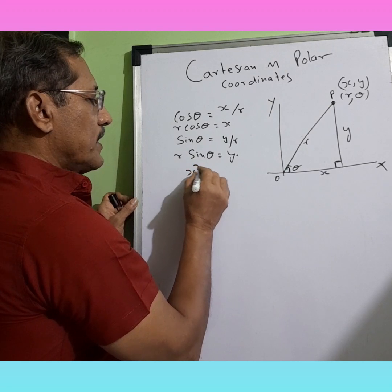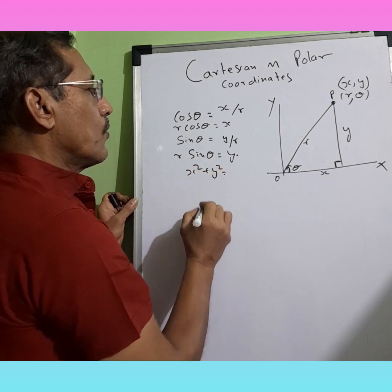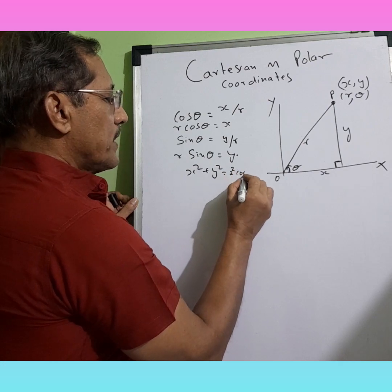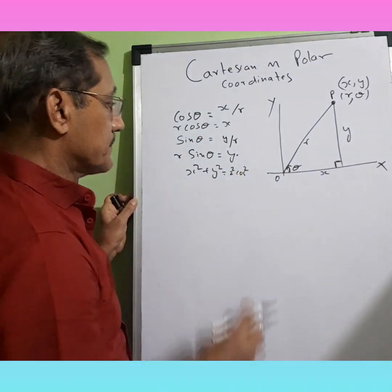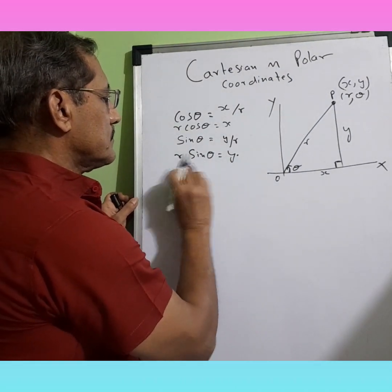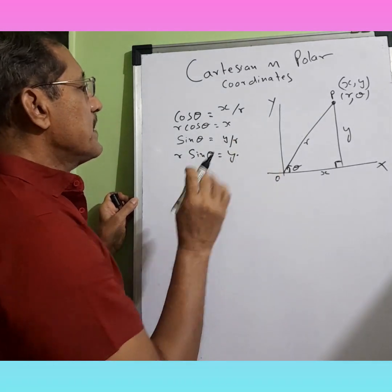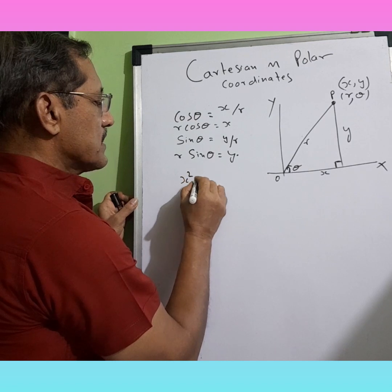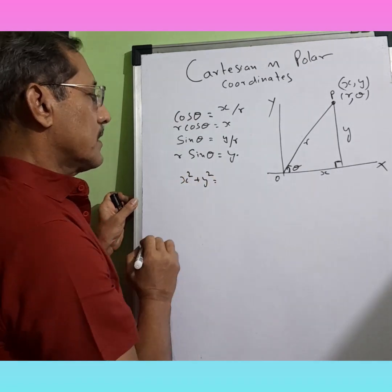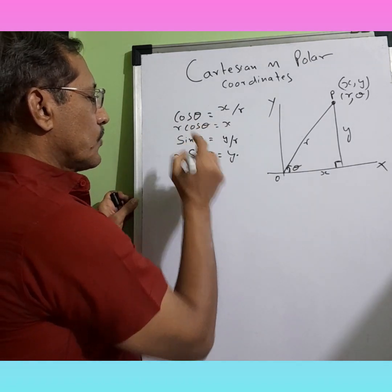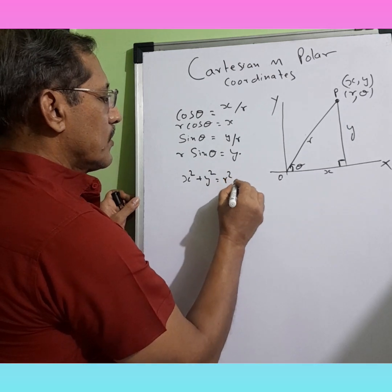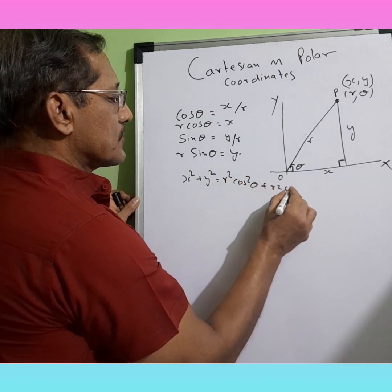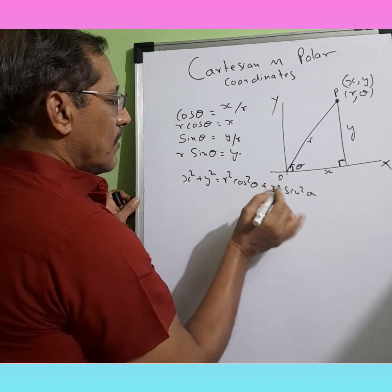Now if I say X square plus Y square is equal to what? It would be R square cos square theta, let me write it below. X square plus Y square would be equal to R square cos square theta plus R square sin square theta.